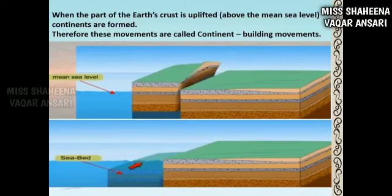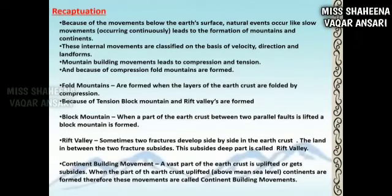If the originally continental portion of the crust subsides below the sea level, it forms part of the seabed — as shown in the picture, you can see the seabed.